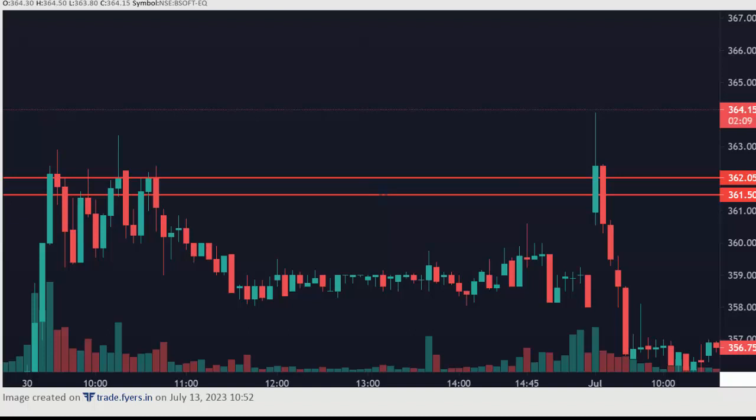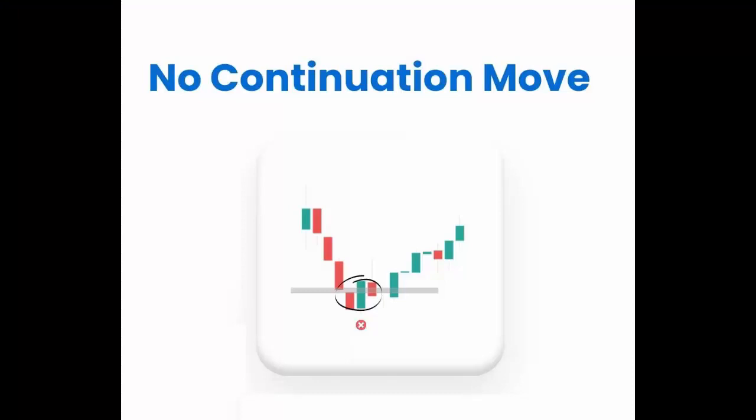Now let's check the next example: no continuation move. If a stock breaks the support and retests back, then if it didn't break the previous low, that is also a chance for a false breakout. I will show you one example.